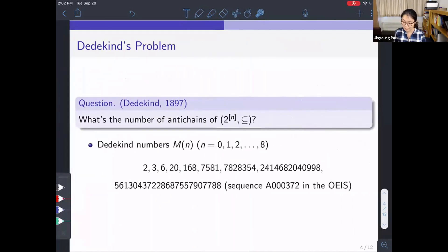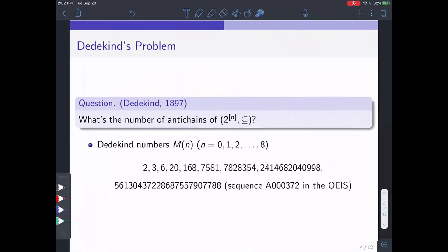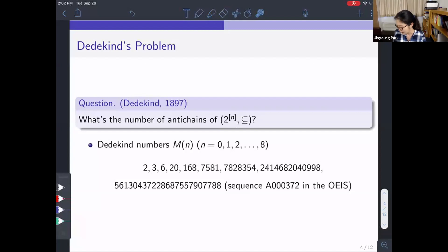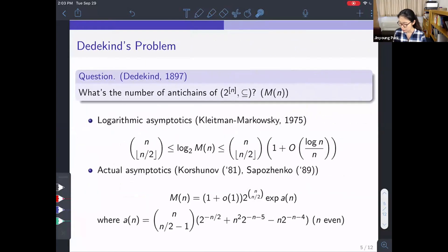In 1897 Dedekind asked this question: What is the number of antichains of 2^n? This number is called Dedekind's number and we use M(n) for this number. The exact value of this number is known for n up to 8. Here you see that this is a rapidly increasing sequence and, in general, the closed formula for M(n) is not known.